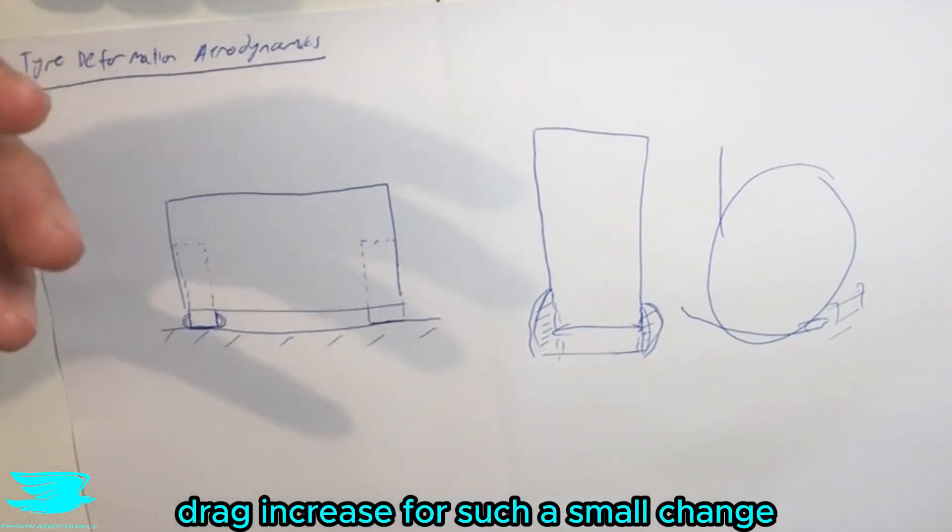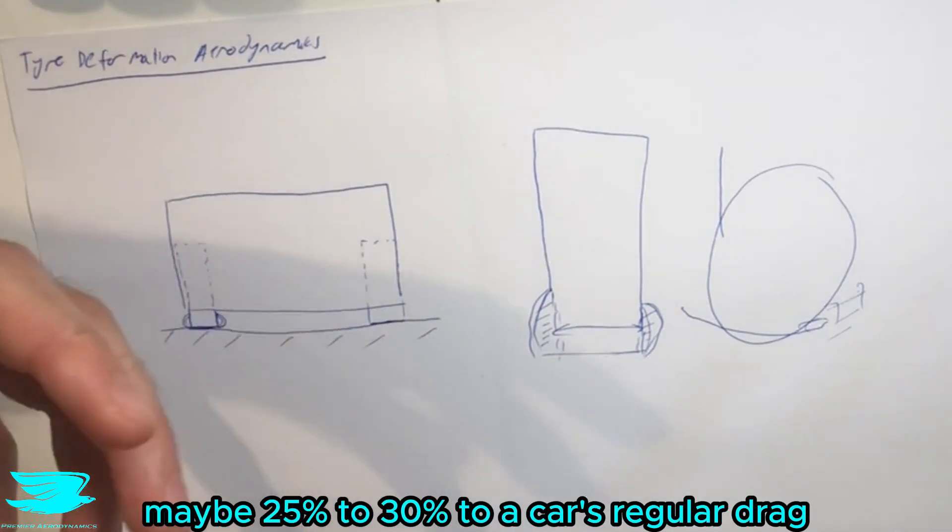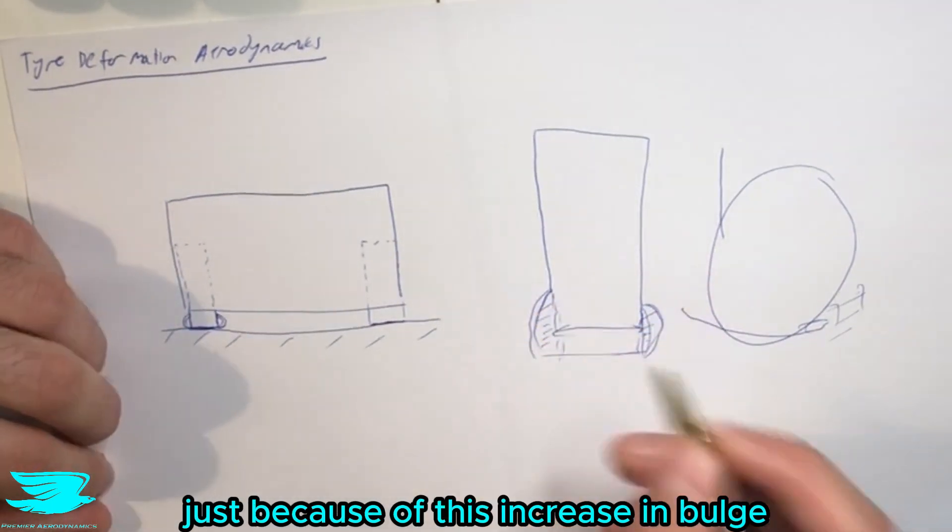And also, wheels already contribute maybe 25 percent to 30 percent of a car's regular drag, so that's already now an even greater increase just because of this increase in bulge.